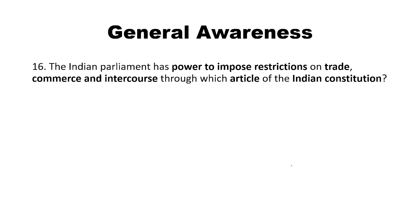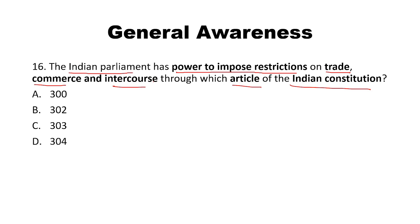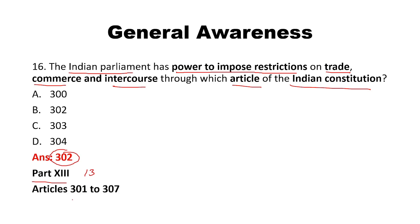The Indian Parliament has the power to impose restrictions on trade, commerce, and intercourse through which article of the Indian constitution? Options: Article 300, 302, 303, 304. The answer is Article 302. Articles related to trade and commerce range from Article 301 to 307, and under Article 302, Parliament has the power to impose restrictions on trade and commerce. This falls under Part 13.